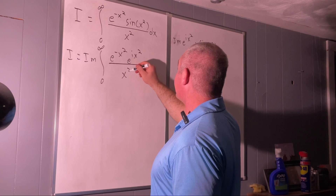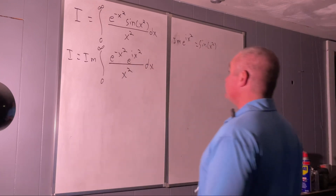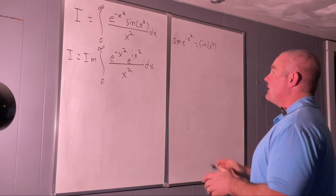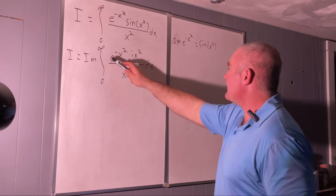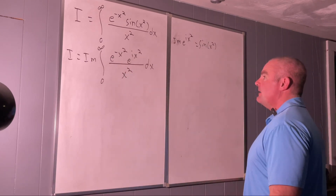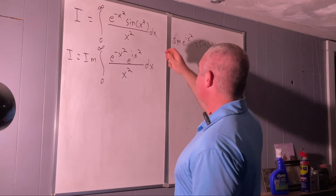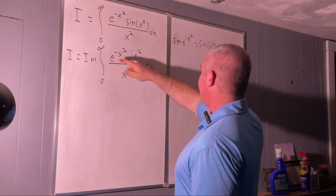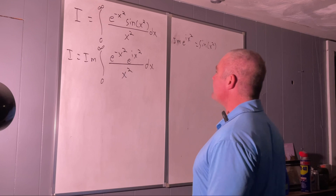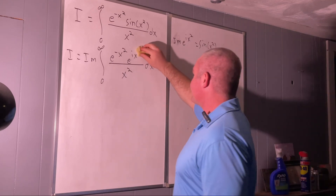We can combine these two using the properties of exponents into one exponent on e — that would be e to the (i minus 1) times x squared.